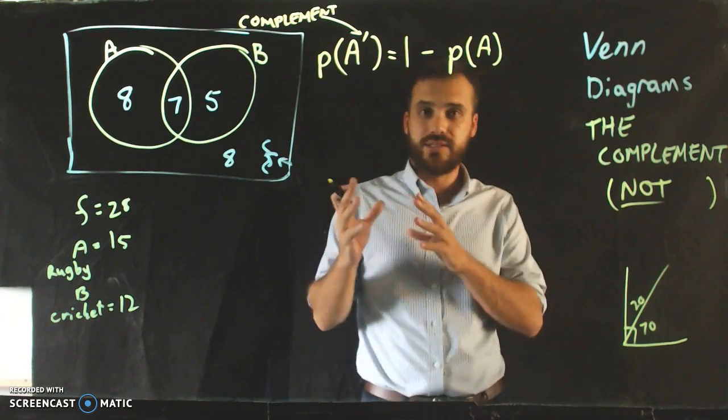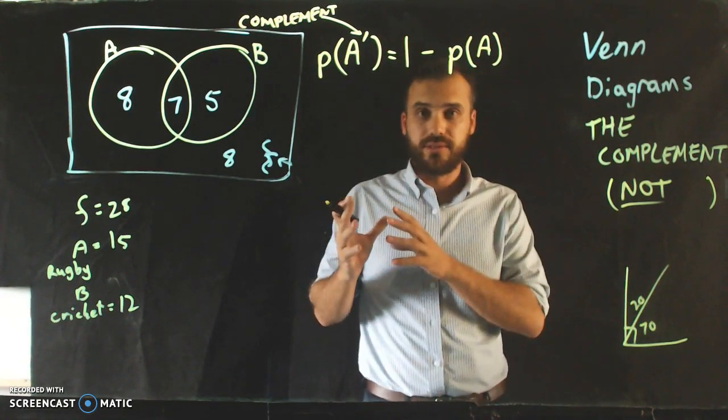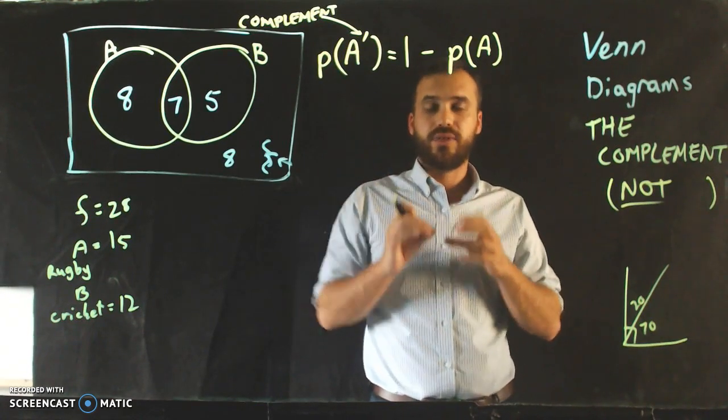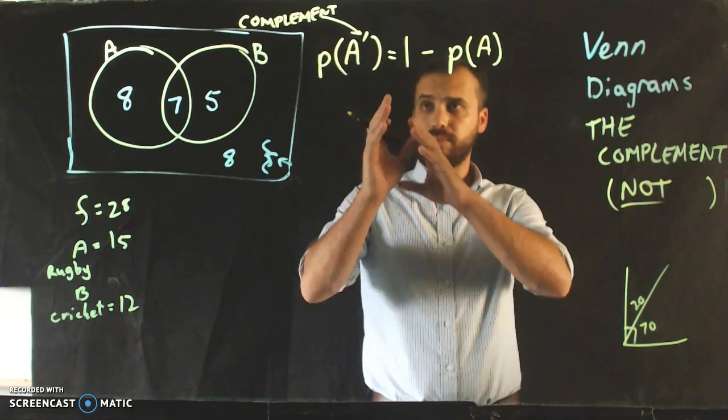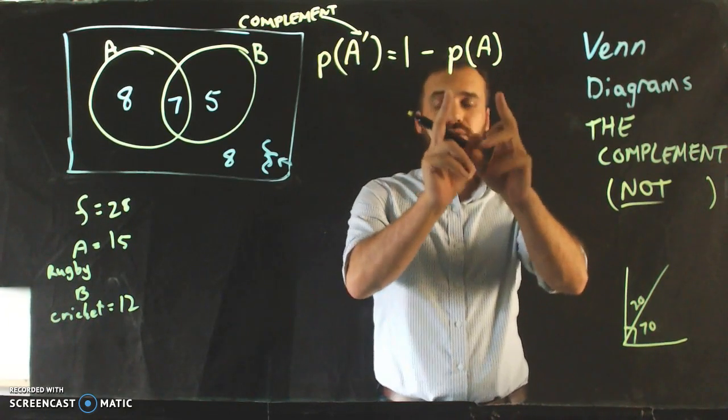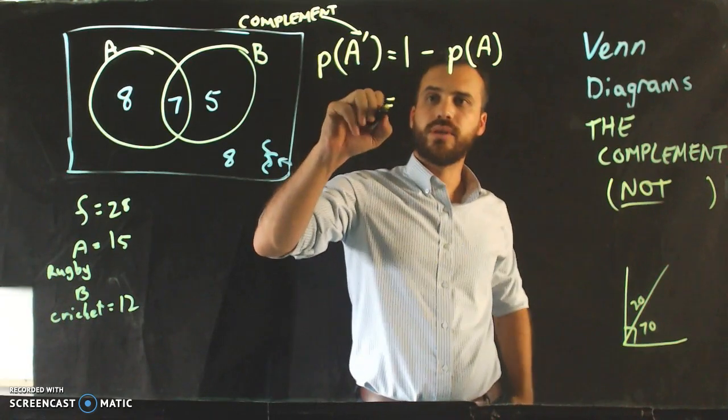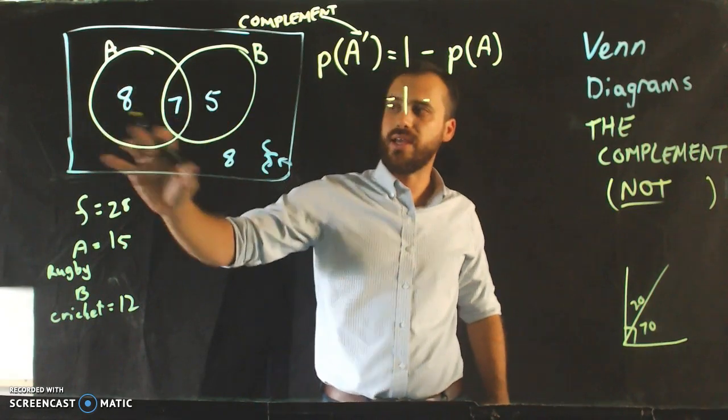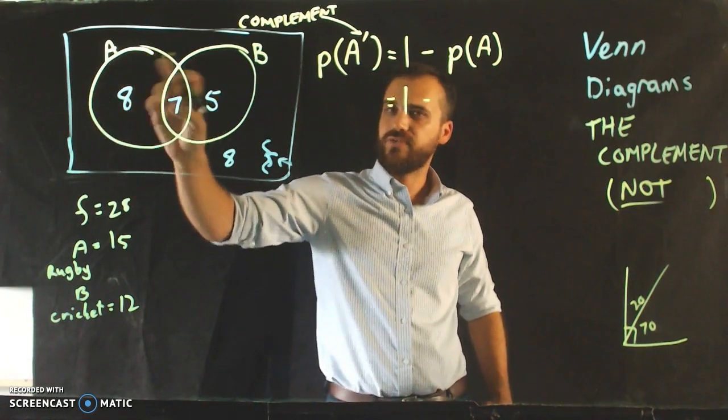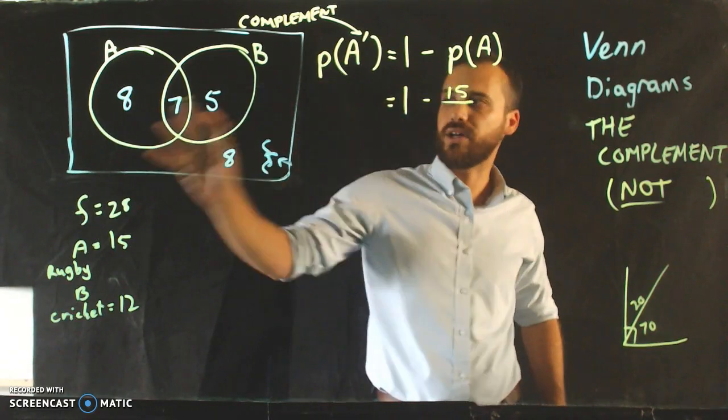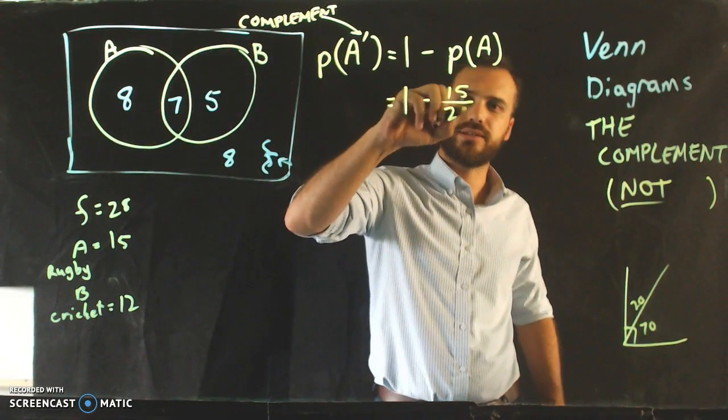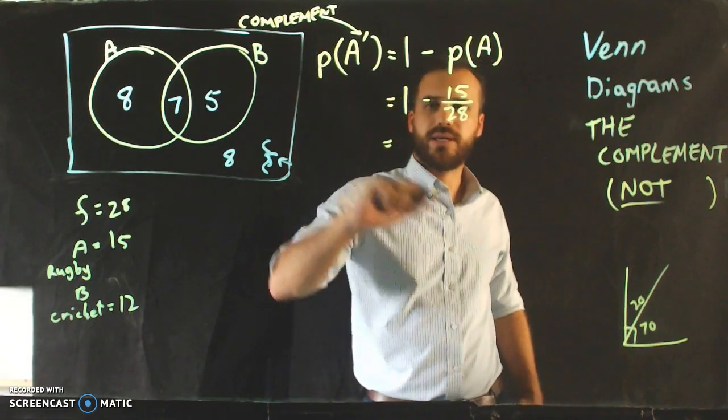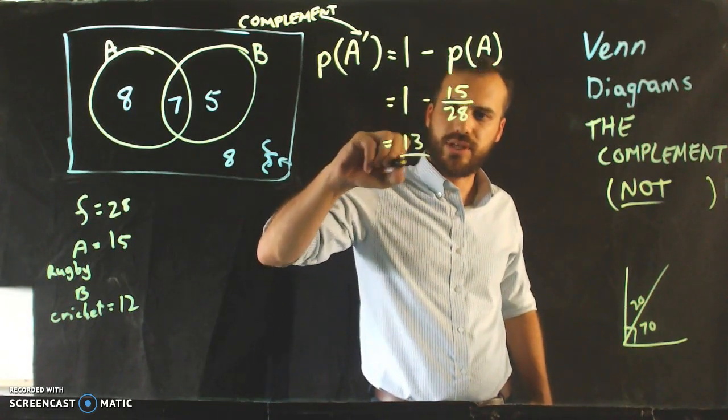The probability that something is not in set A will be equal to 1 minus the probability that it is in set A. So as long as those events are complements - that is, either you're in this one or you're in this one, you can't be somewhere else - then the probability of the complement is equal to 1 minus the thing. And from there it's fairly simple to work out. We know that the probability of A is 15 over 28, so 1 minus 15 over 28 is 13 over 28.